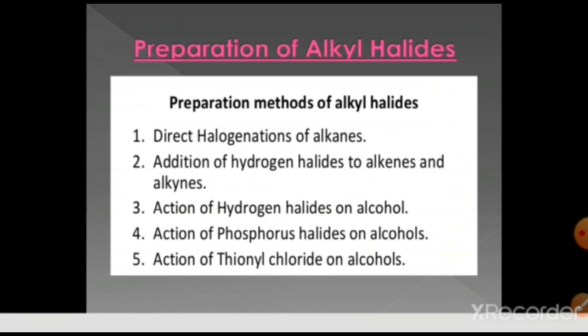Different methods are used to prepare alkyl halides: direct halogenation of alkanes, addition of hydrogen halides to alkenes and alkynes, action of phosphorus halides on alcohols, and action of thionyl chloride on alcohols. The first two methods — direct halogenation and addition of hydrogen halides to alkenes and alkynes — have been discussed in previous lectures, so we will focus on the reactions of hydrogen halide, phosphorus halide, and thionyl chloride with alcohols and their mechanisms.